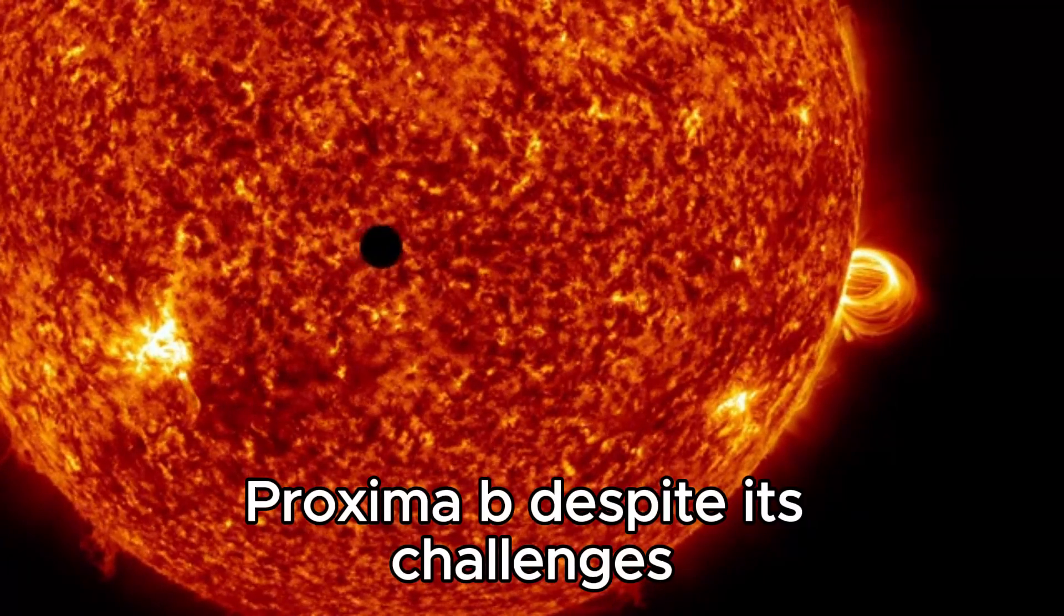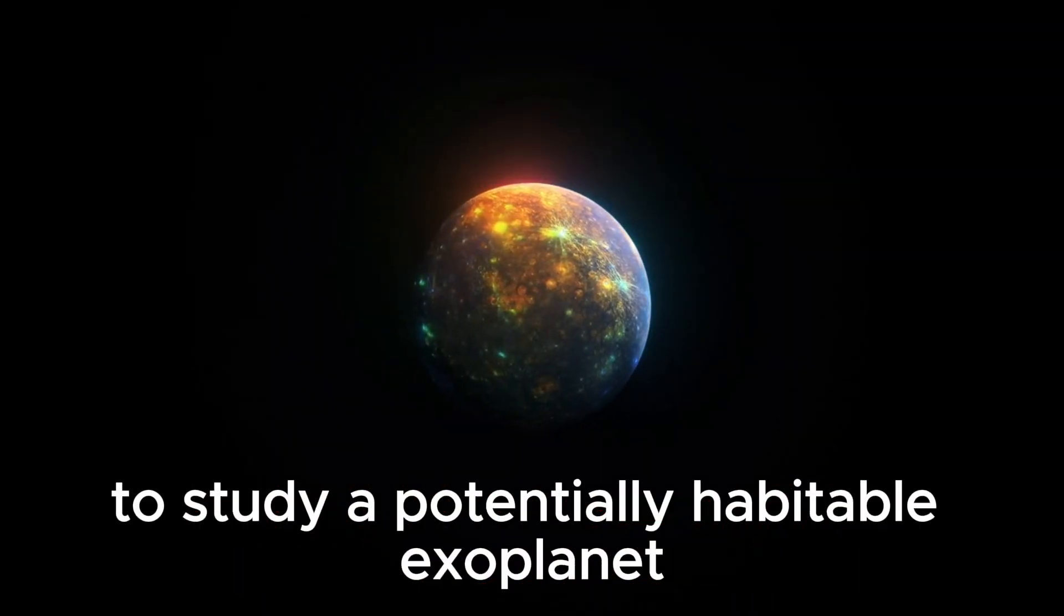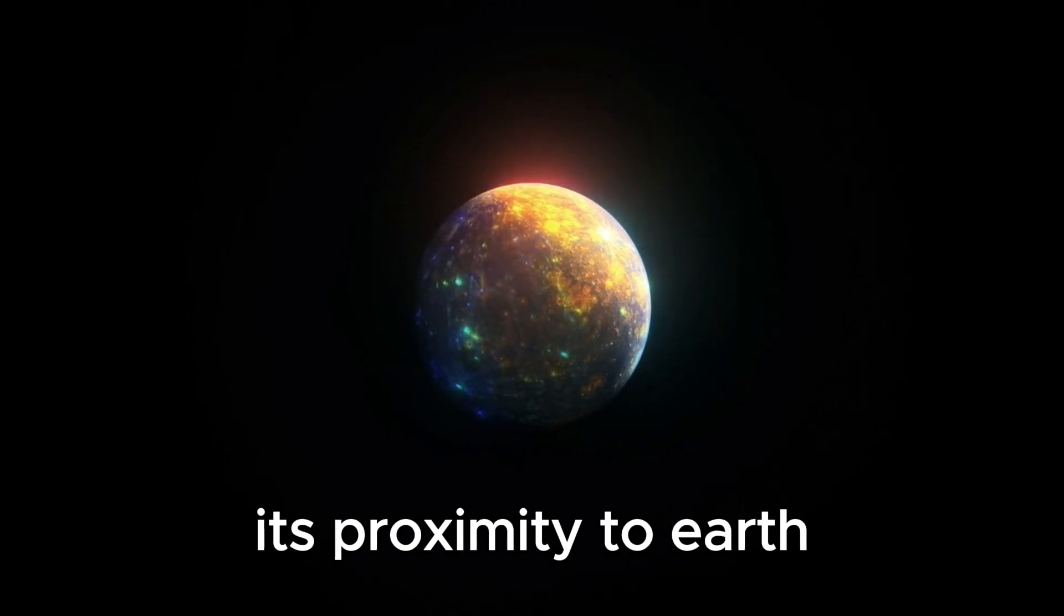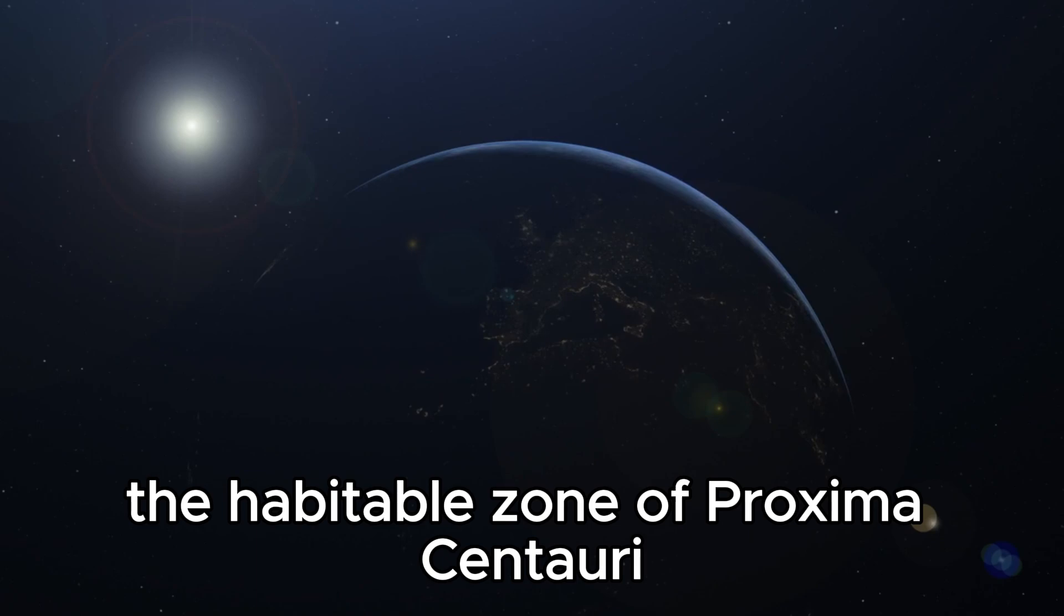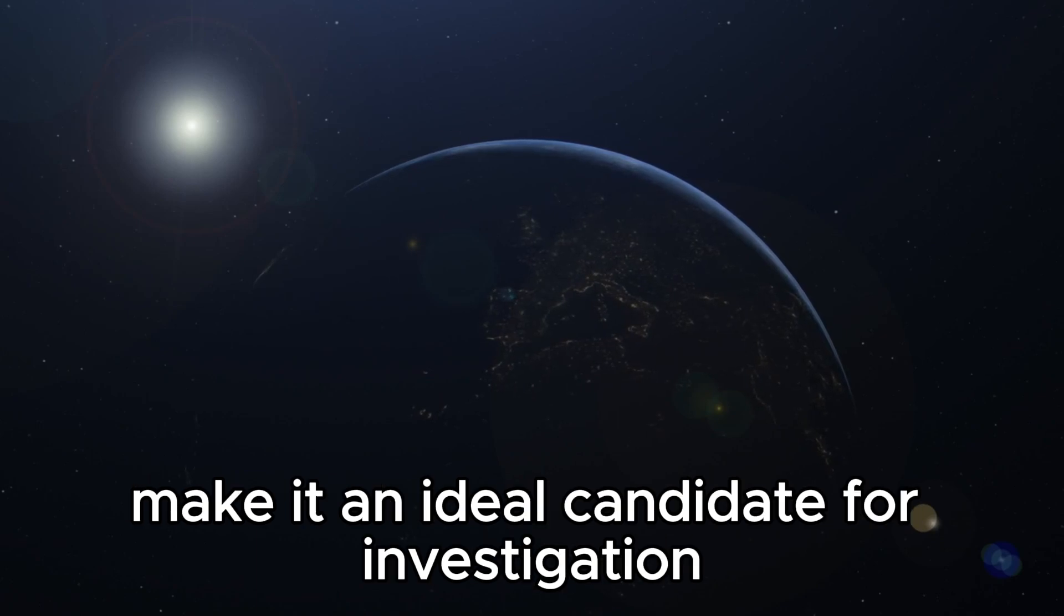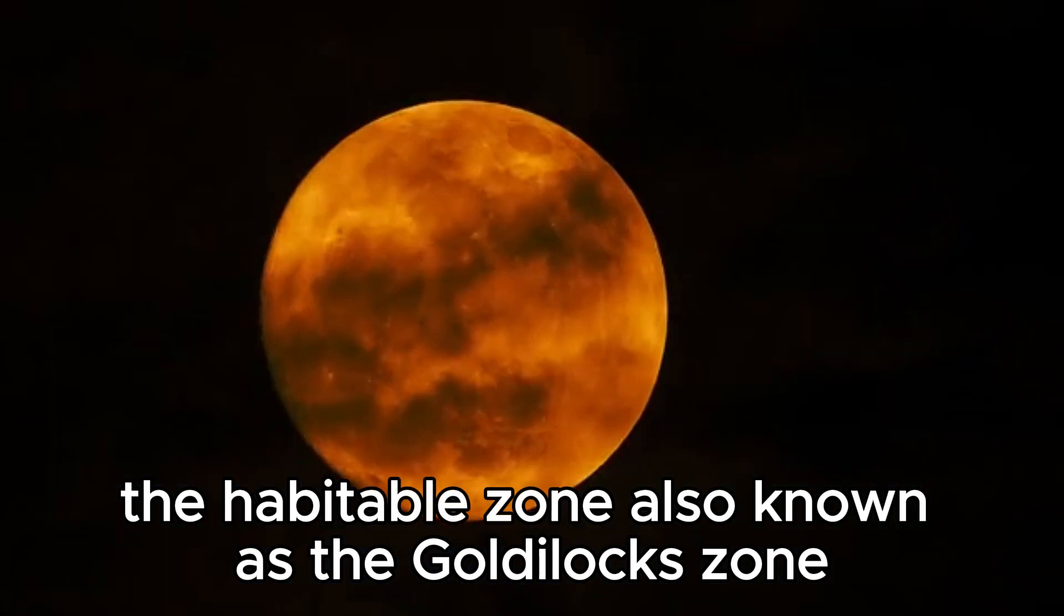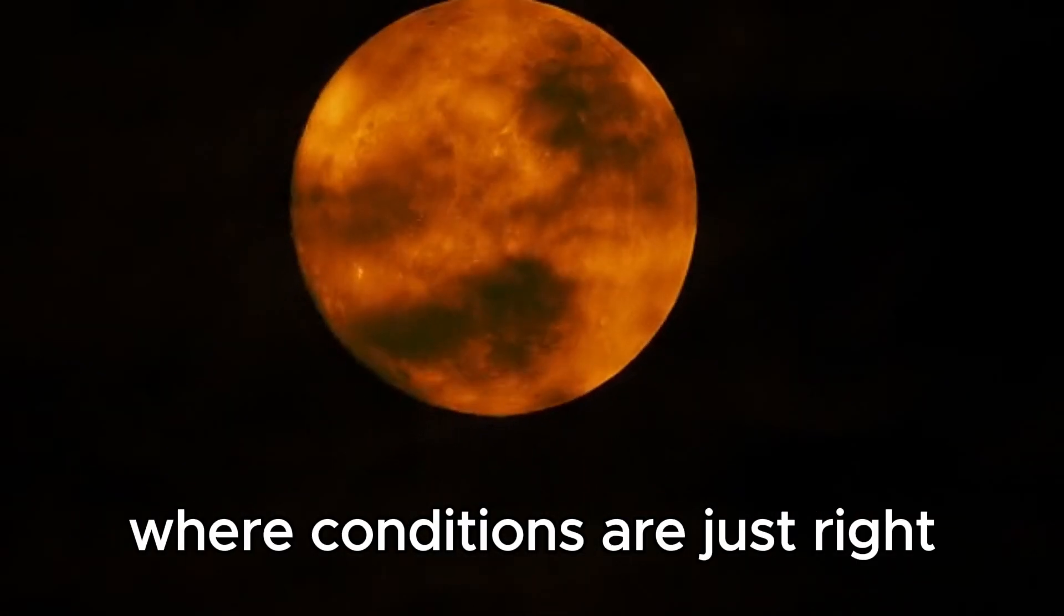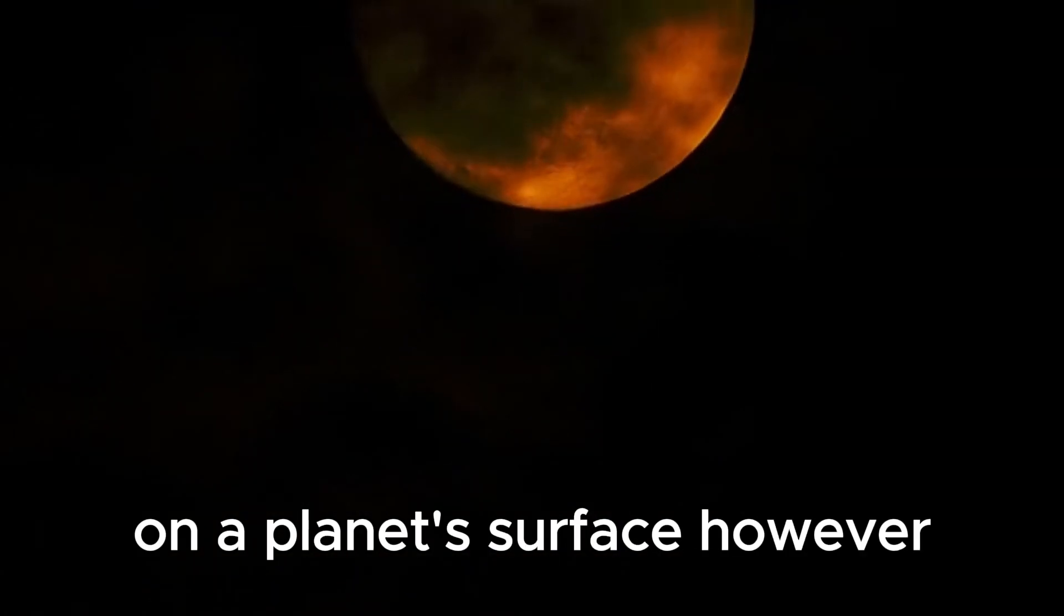Proxima B, despite its challenges, presents a tantalizing opportunity for scientists to study a potentially habitable exoplanet. Its proximity to Earth and the fact that it orbits within the habitable zone of Proxima Centauri make it an ideal candidate for investigation. The habitable zone, also known as the Goldilocks zone, is the region around a star where conditions are just right for liquid water to exist on a planet's surface.